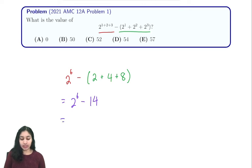Because 2^6 = 64, we can replace that. Our answer is 64 - 14, which is 50.